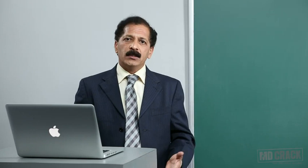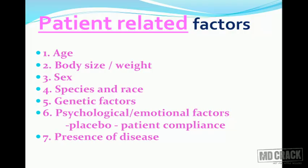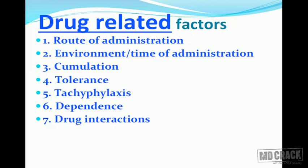Factors modifying drug effect could be the factors which are related to the patient, or could be related to the drug. Patient-related factors include age, body size or weight, sex, species and race, genetic factors, psychological and emotional factors like placebo, patient compliance, and the presence of disease. Drug-related factors include route of administration, environment or time of administration, accumulation, tolerance, tachyphylaxis, drug dependence, and various drug interactions.